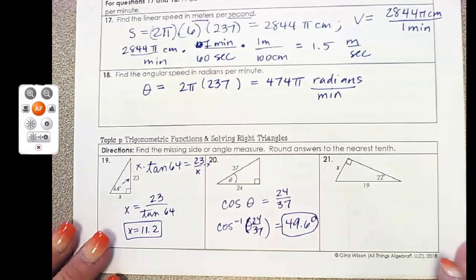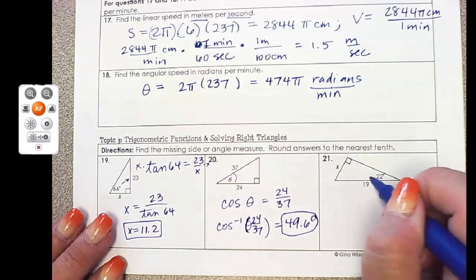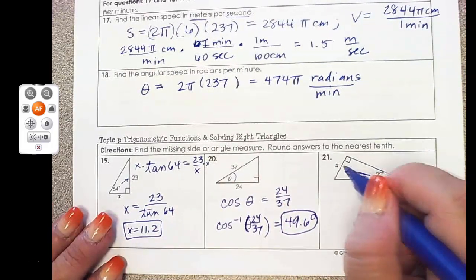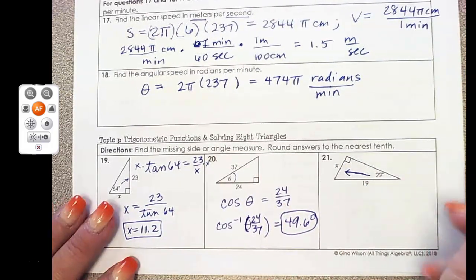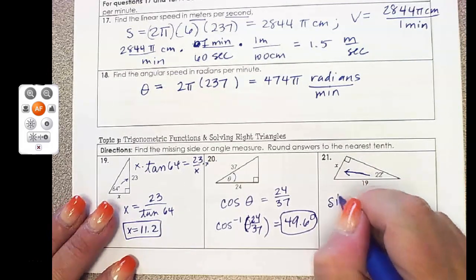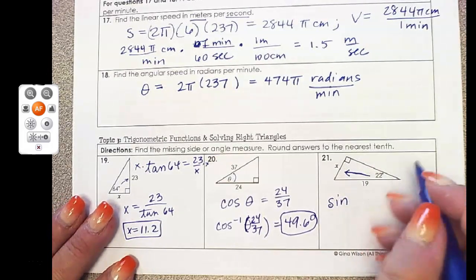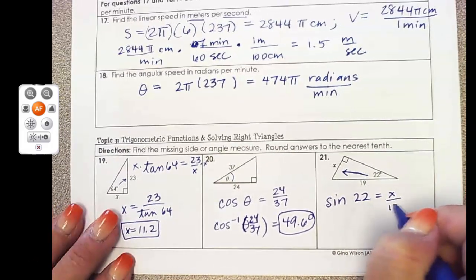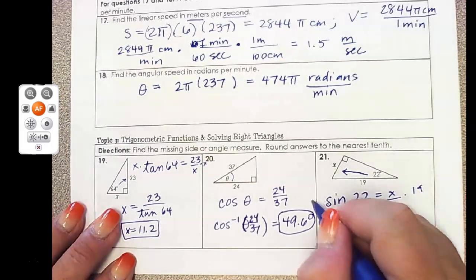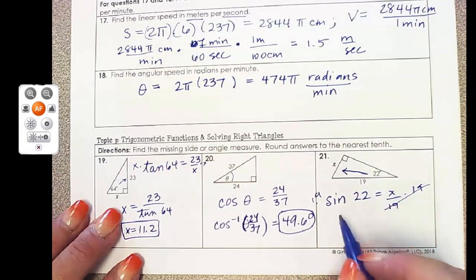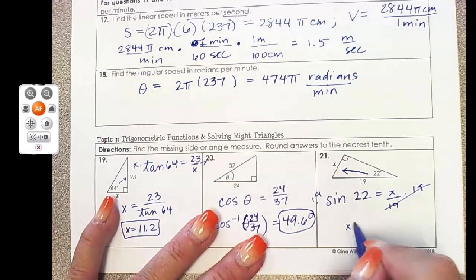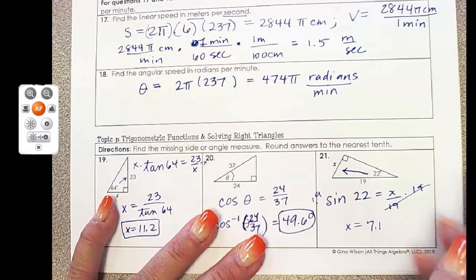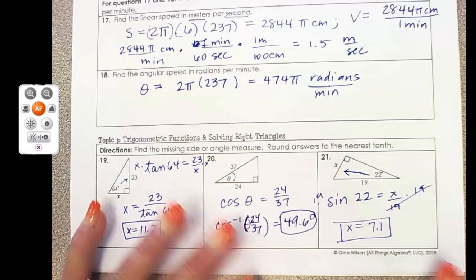I always use degrees when I'm inside of a triangle. And here I want the opposite and I know the hypotenuse. So that's going to be sine of 22 equals x over 19, multiply by 19 on both sides. And that you just pop it into your calculator. x equals 7.1. No units are given.